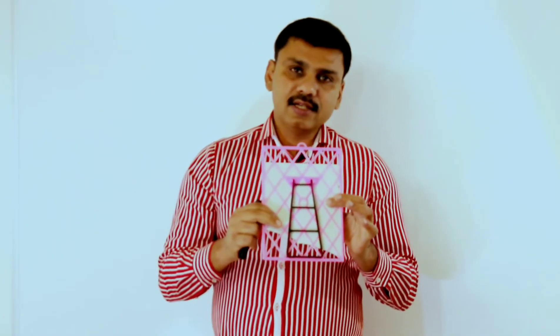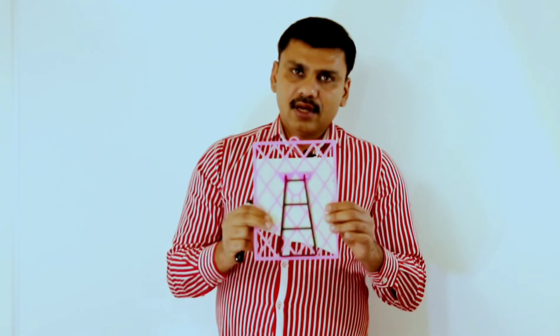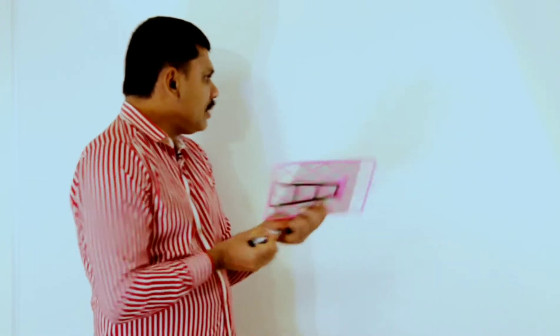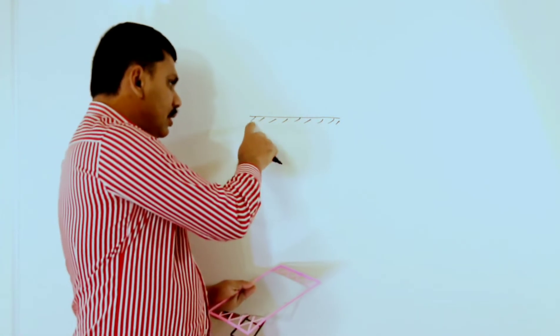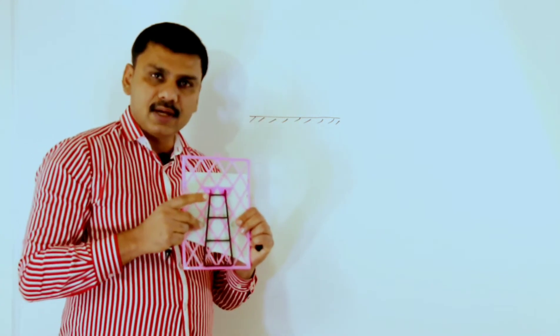We are discussing the reflection by a plane mirror. When a ray falls on the mirror surface, that ray is known as the incident ray. The back side of the mirror is coated with silver, and the front is the reflecting surface. A plane mirror is represented with hatching lines on the back side to show the non-reflecting side.